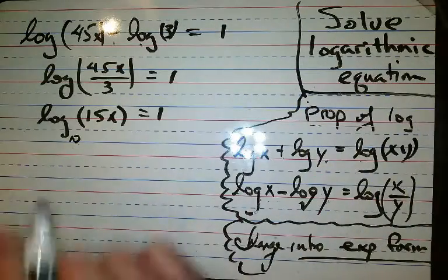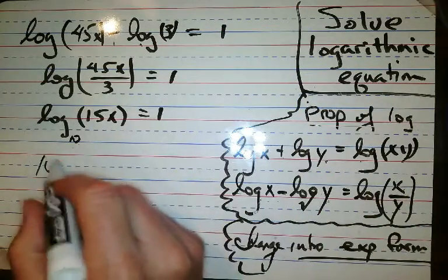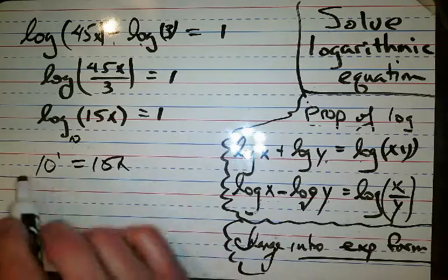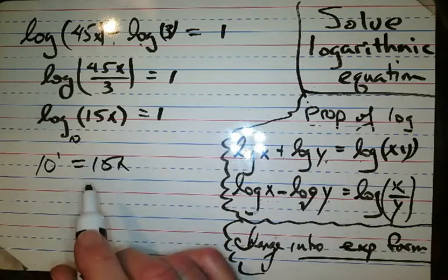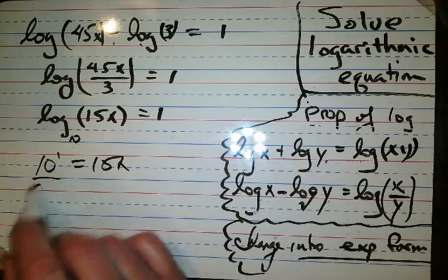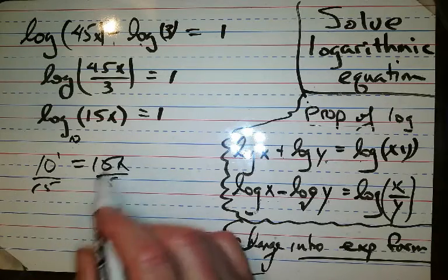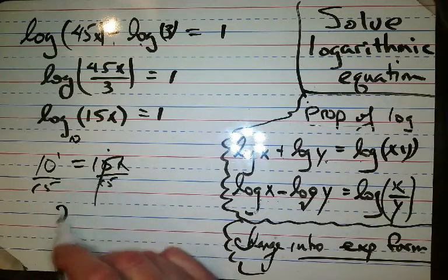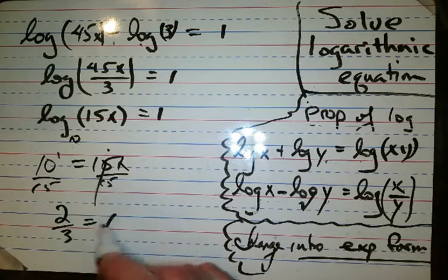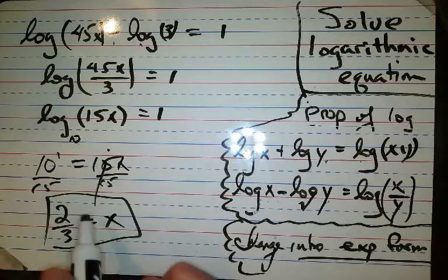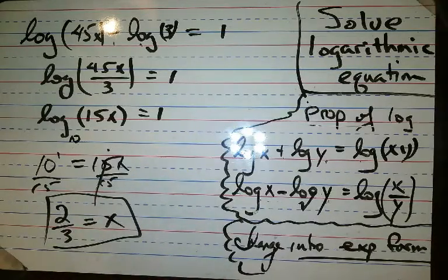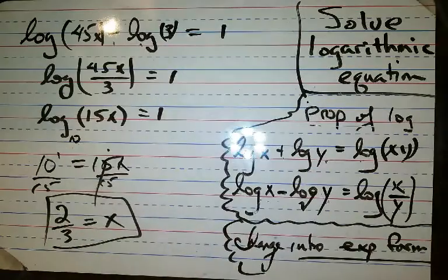Okay, so what does that mean? That means 10 to the 1 equals 15x. Well 10 to the 1 is just 10. So 10 divided by 15. If we reduce that, that would be 2 thirds. We are done. That's exactly what we want.